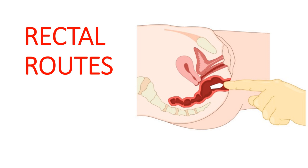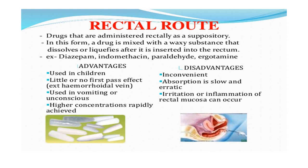The third type is the rectal route. When children have a high-grade fever, we usually place a drug in their rectum. These drug forms are called suppositories. The rectum has large vascularity so the drug is absorbed very fast and the action is also very fast.